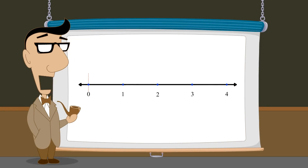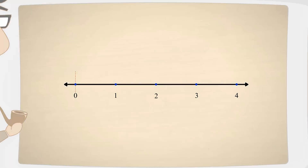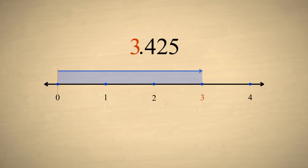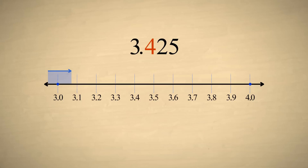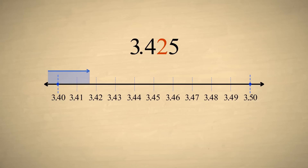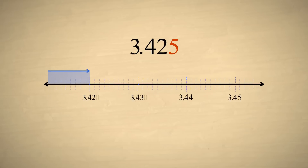Using a number line, we can see how each digit adds different size divisions to the number. For example, the decimal number 3.425 represents three units, plus four-tenths of a unit, plus two-hundredths of a unit, plus five-thousandths of a unit.